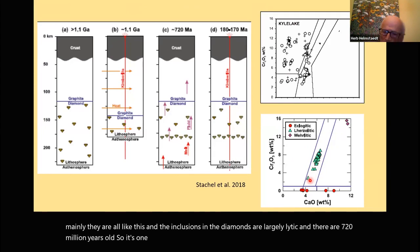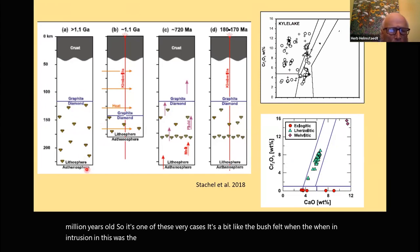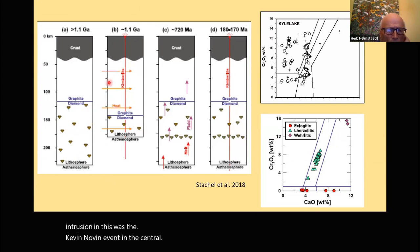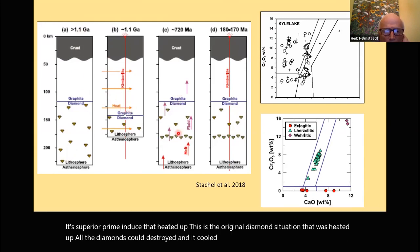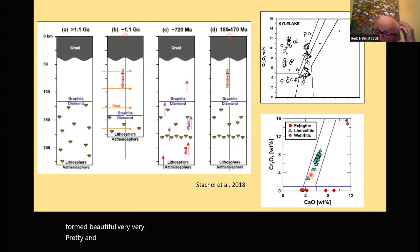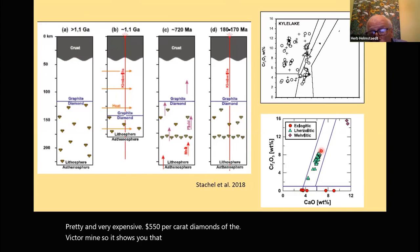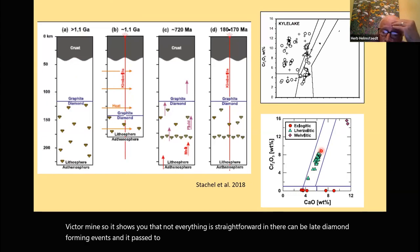Victor is one of those rare cases — a bit like the Bushveld — where an intrusion, the Keweenawan event in the central Superior Province, heated up the original diamond situation, destroyed all the diamonds, and then when it cooled down, beautiful diamonds formed — 720 Ma Lherzolitic inclusions, very expensive at $550 per carat. It shows that not everything is straightforward: there can be late diamond-forming events, and it pays to also take heed of Lherzolitic garnets in exploration.